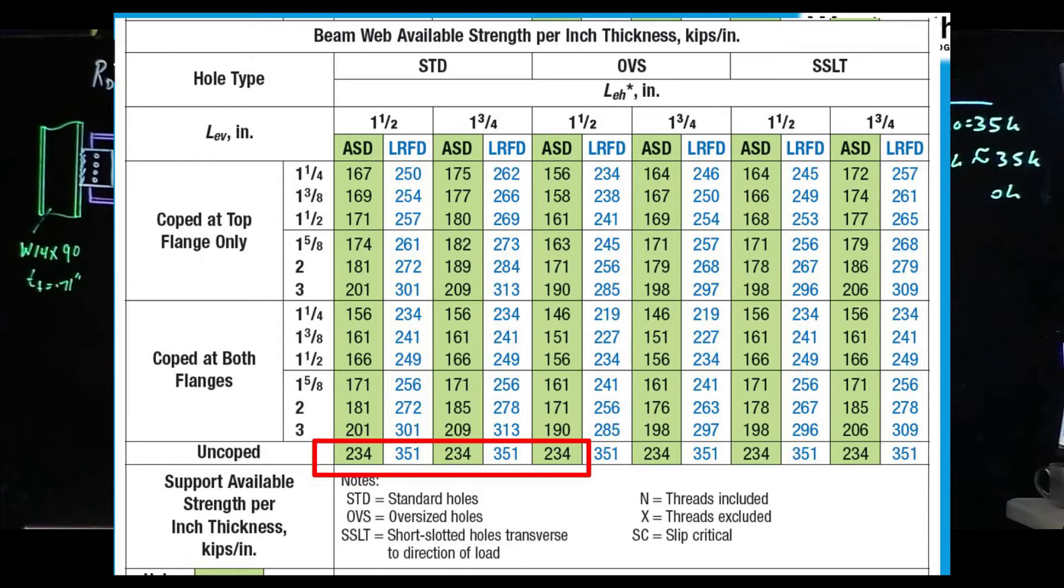That means if we have to convert it back to kip, we have to multiply by the web thickness. When we look at this table right down at the bottom for uncoped, you can see both for LRFD and allowable—I mean for load-resistant factor design—the number has been given. In our case, it's 351.